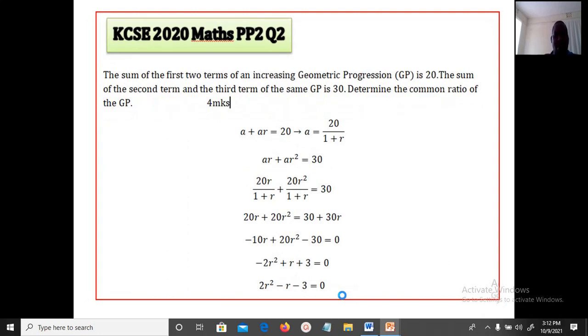Now Question 2: The sum of the first two terms of an increasing geometric progression is 20. The sum of the second term and the third term of the same GP is 30. Determine the common ratio of the GP. Now we are told that the sum of the first two terms, that is a plus ar is 20. So this implies that if you solve for a here, you will get that a is equal to 20 over 1 plus r.